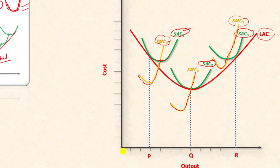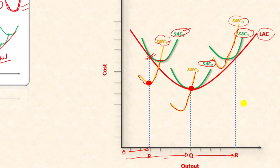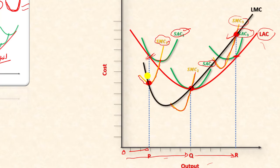When we produce OP output, the corresponding marginal cost is at a certain point on the short run marginal cost curve, and the average cost is at another point. When we produce OR output, the marginal cost corresponds to a specific point. By joining these marginal cost points from different plants at different output levels, we obtain the long run marginal cost curve.